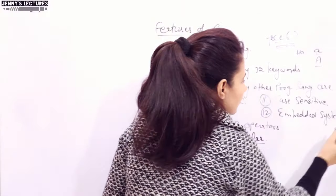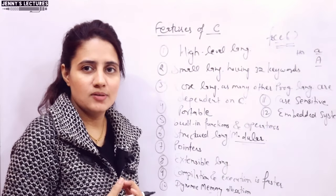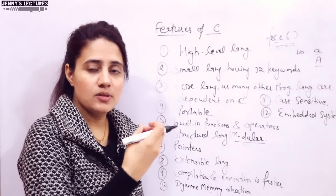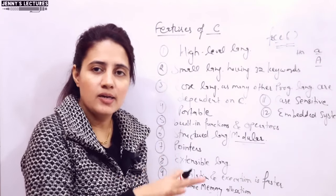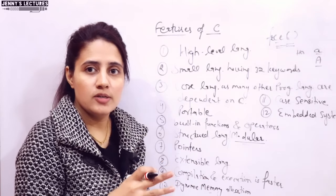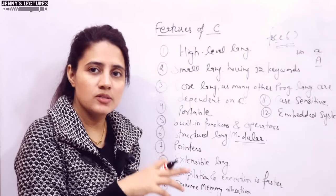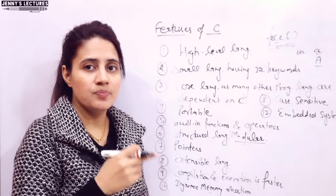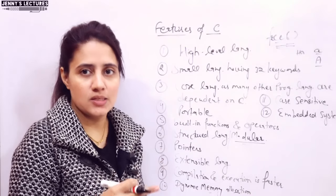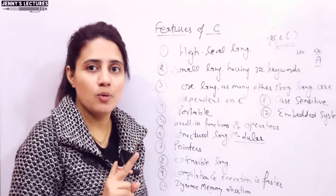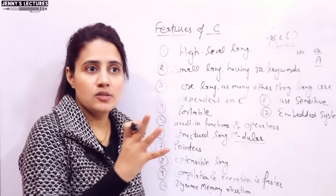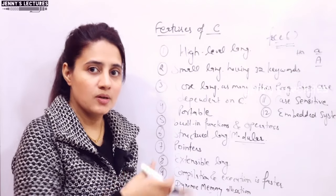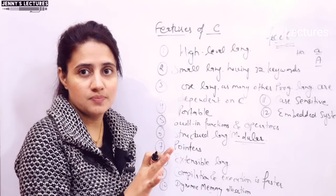C is used to develop and operate embedded systems, which is why it is also known as a system programming language. Systems like your fridge and microwave have programming done behind them — the software for those electronic devices is written in C language. So C is one of the most popular languages for system programming and embedded systems. Java, Python, and C++ are very popular, but C still has its own space because of these features.